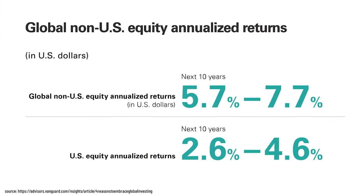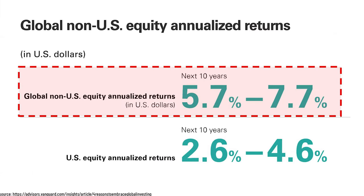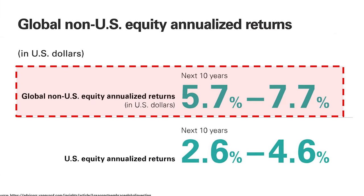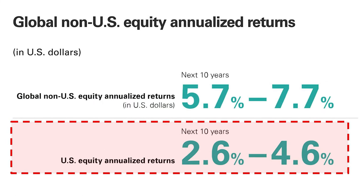Benefit number two: international stocks currently have a higher expected return over the next 10 years than US stocks. According to a Vanguard model, international stocks are expected to outperform US stocks by around 3% per year. Benefit number three: you reduce volatility by adding international stocks to your US stock market portfolio, because you hedge your bets.